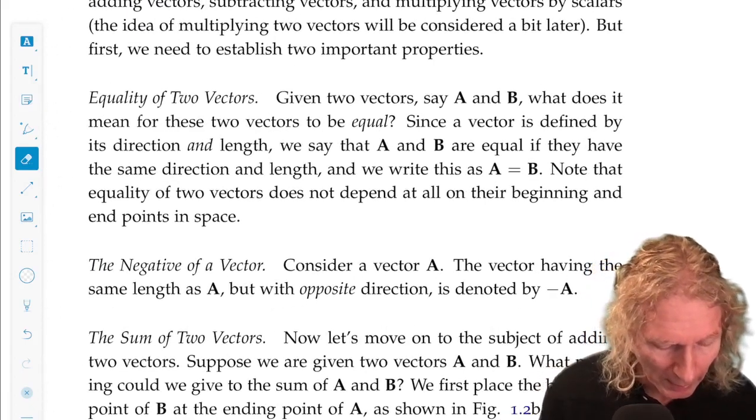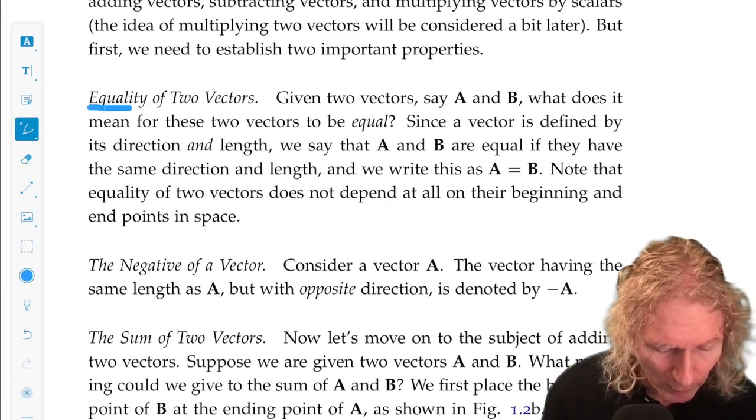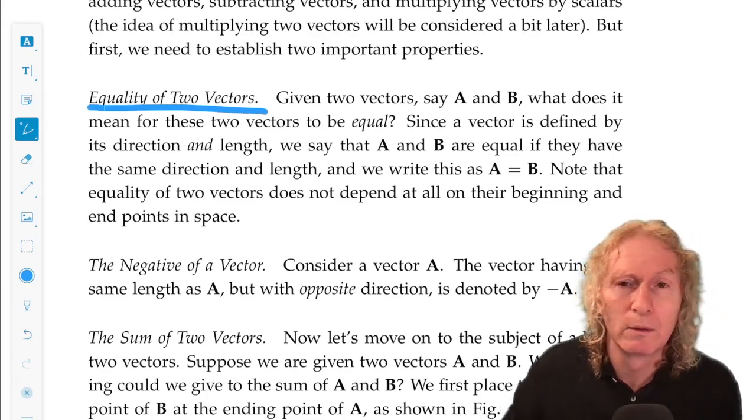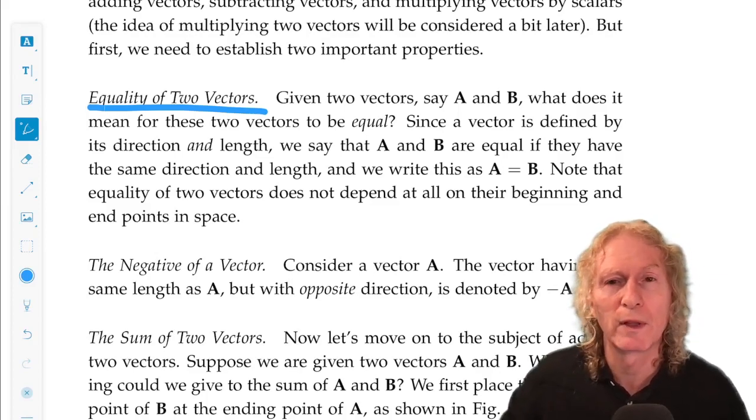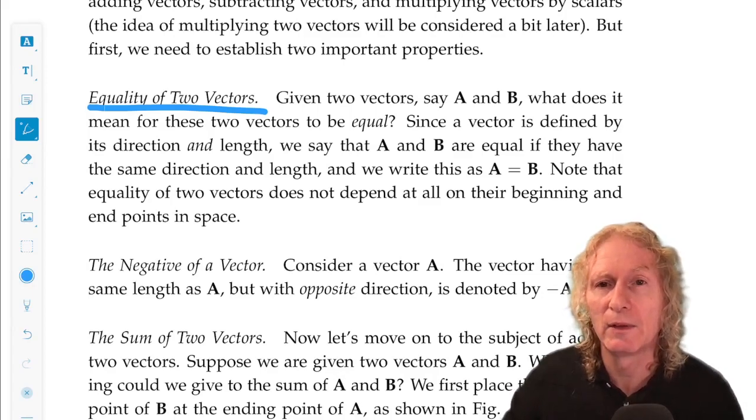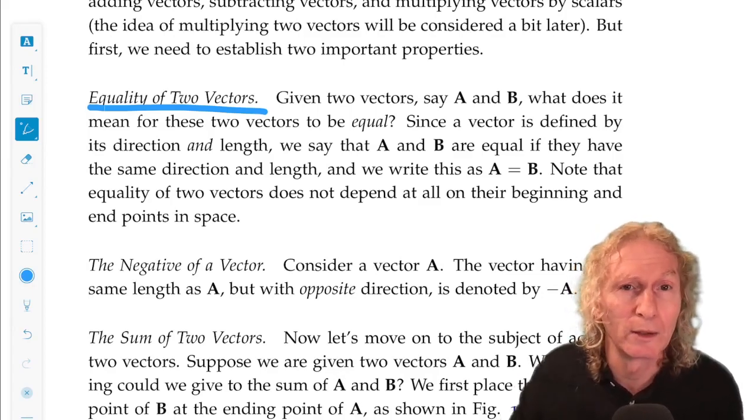Well, the first notion we're going to have is equality of two vectors. What do we mean by that? Vector has length or magnitude and direction. So two vectors are equal if they have the same direction and the same length or magnitude.